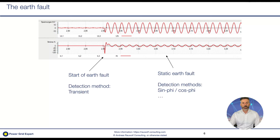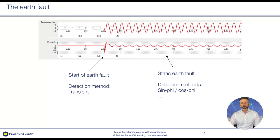The detection devices have to be quite quick to detect the fault. If the earth fault persists in the network, we have the so-called static earth fault: a 50 Hz zero sequence voltage and a 50 Hz zero sequence current. These signals are used to find the fault. Transient detection only looks at the transient at the beginning, while static methods look at the 50 Hz signal. Today we focus on the sinus V and cosinus V methods, the most commonly used static methods, though more methods are available.